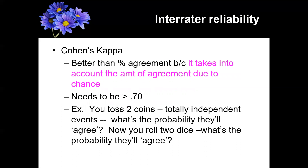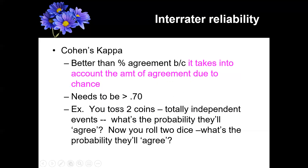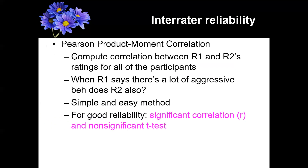A better measure is Cohen's kappa, which is percent agreement but also takes into account the amount of agreement due to chance. For example, if you toss two coins — totally independent events — the probability they'll agree by chance is higher than if you roll two dice, because there are more possible outcomes with dice. Cohen's kappa is a measure of reliability that accounts for the probability of agreement due to chance.